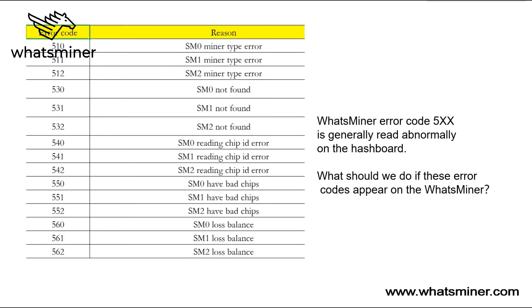What's minor error code 5? Normal is early read abnormally on the hash board. What should we do if these error codes appear on the Whatsminer?